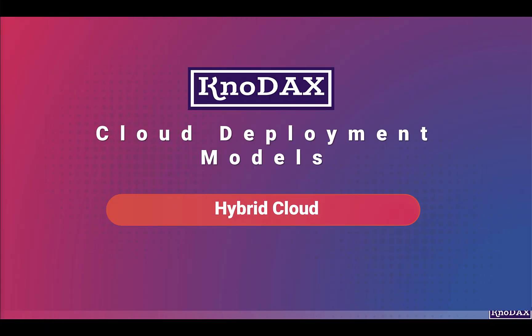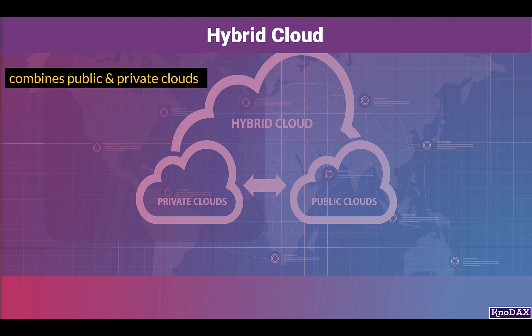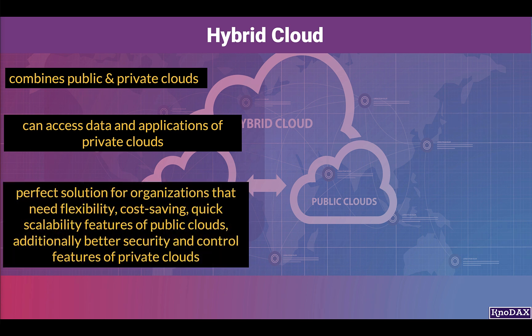In this lecture, we will learn about hybrid cloud. In simple words, hybrid cloud combines both public and private clouds. The key point of a hybrid cloud is that it is a cloud solution that allows seamless interaction between public and private clouds. For example, public cloud can access data and applications of private cloud, and the converse is also possible.